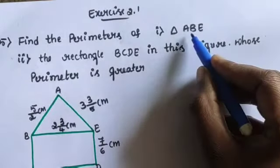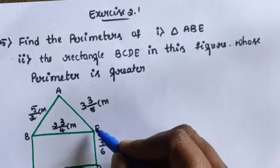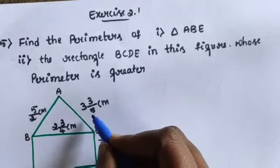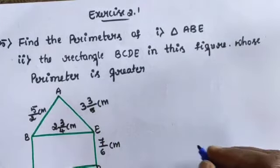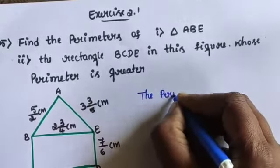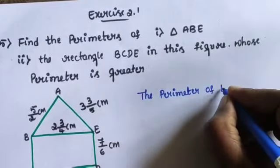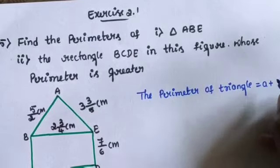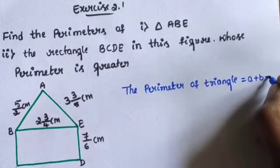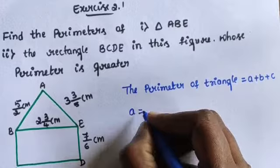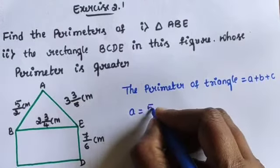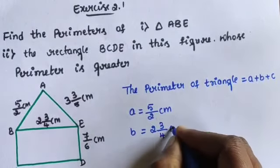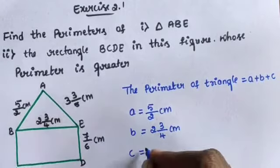First, find the perimeter of triangle ABE. AB is 5/2 cm, BE is 2¾ cm, and EA is 3⅗ cm. Then write the perimeter of triangle formula: perimeter equals A plus B plus C. So A equals AB length = 5/2 cm, B equals 2¾ cm, and C equals 3⅗ cm.